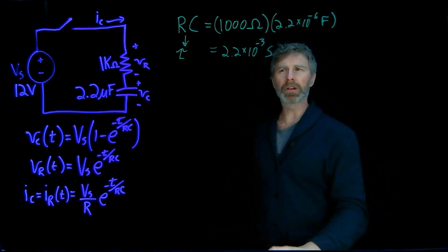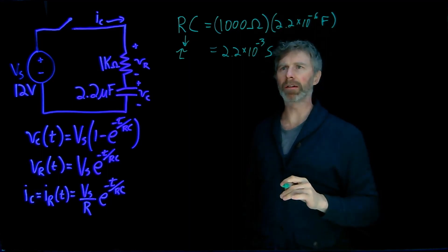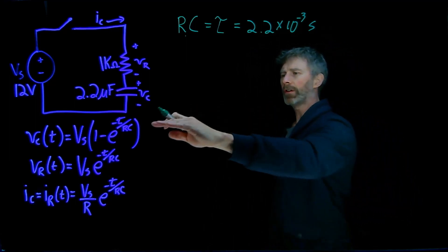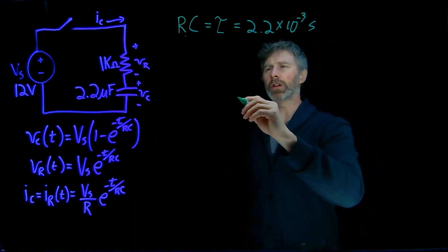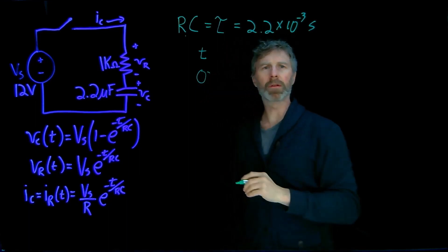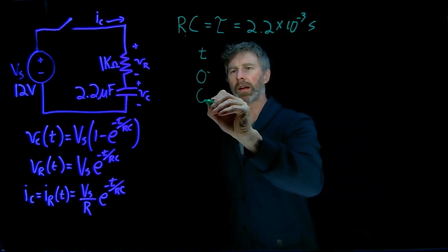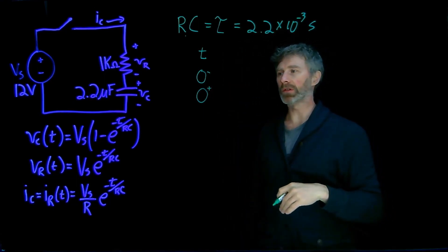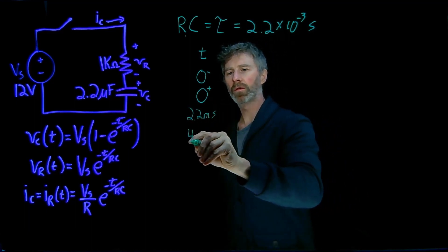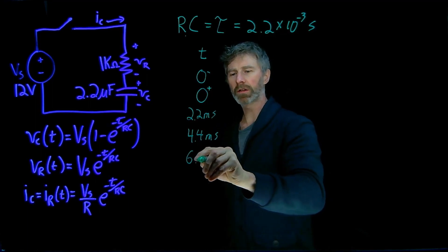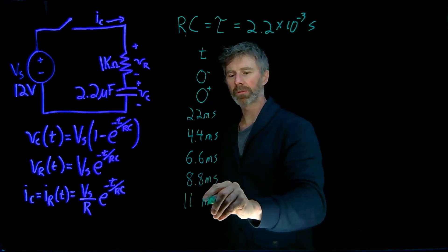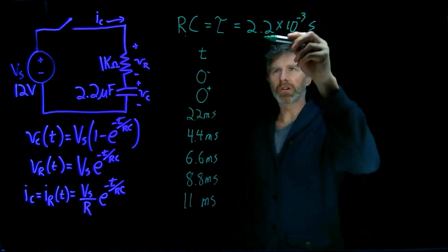I'll speak a little bit more about the importance of tau at the end of this example, so stay tuned for that. We're going to figure out values for the voltages and currents for a number of different times: at zero minus — the instant before the switch closes — at zero plus — the instant after the switch closes — and then at 2.2, 4.4, 6.6, 8.8, and 11 milliseconds. It's not a coincidence that I chose those numbers; those are all multiples of tau.